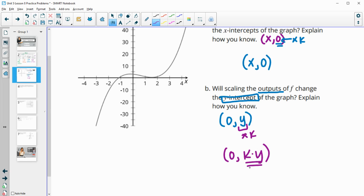It's going to make our y value be k times bigger. So it does change the y-intercept because we're multiplying the y's. Does not change the x-intercept since we'd be multiplying a 0 there.